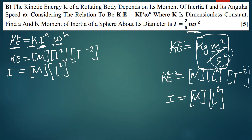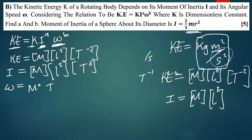For the angular speed — also known as angular frequency — the units are simply per second, meaning T to the power negative one. So the dimensions for angular speed are M⁰·L⁰·T⁻¹.